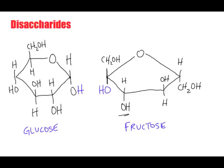Now, let's look at another type of carbohydrate — these are called the disaccharides. We already looked at the monosaccharides, meaning simple sugar, one sugar. We can almost figure out that disaccharide means two sugars. Here we have two monosaccharides, so a disaccharide is a combination of two monosaccharides.